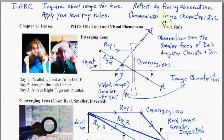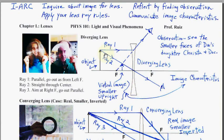Let's look at the first kind of lens: the diverging lens. The diverging lens is one that has a cut that's inward on both sides. One side could be flat, which is a neutral side, but here we're going to look at a cut that's inward on both sides. The light will then do things based on our ray rules.